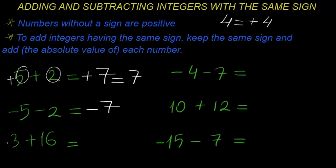In this example, there is nothing in front of three, so we put a plus here. We have plus and plus — the same sign — so the answer will be positive. Three plus sixteen: we add these two numbers, sixteen plus three equals nineteen. Positive nineteen is the answer.